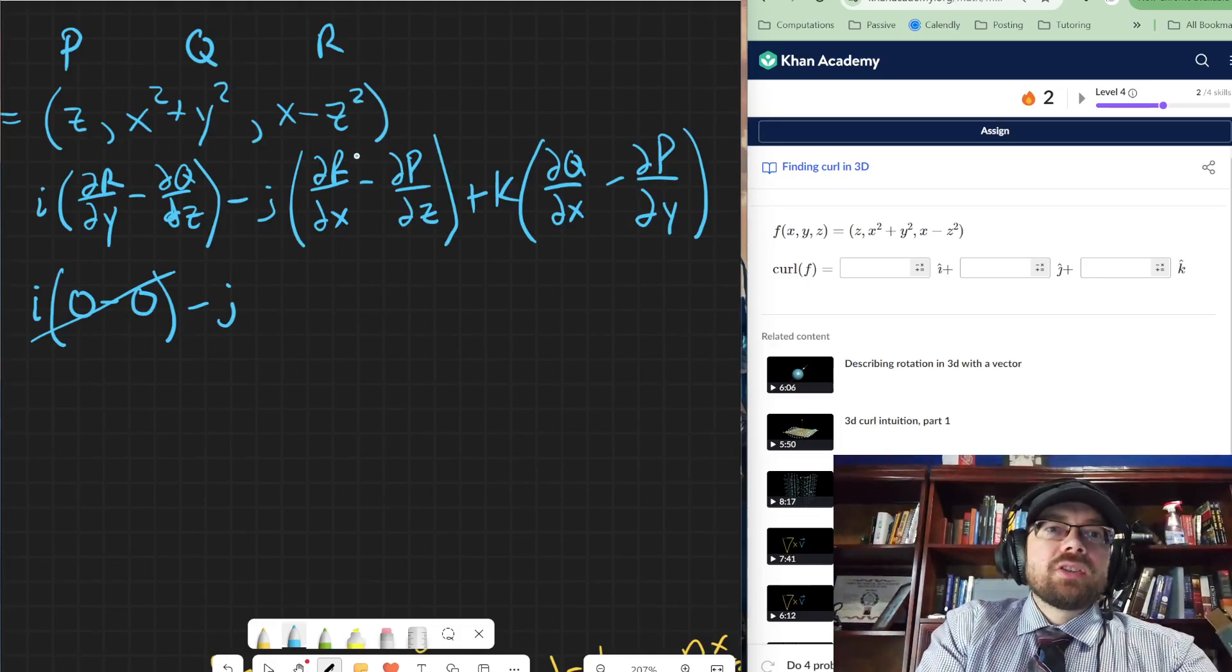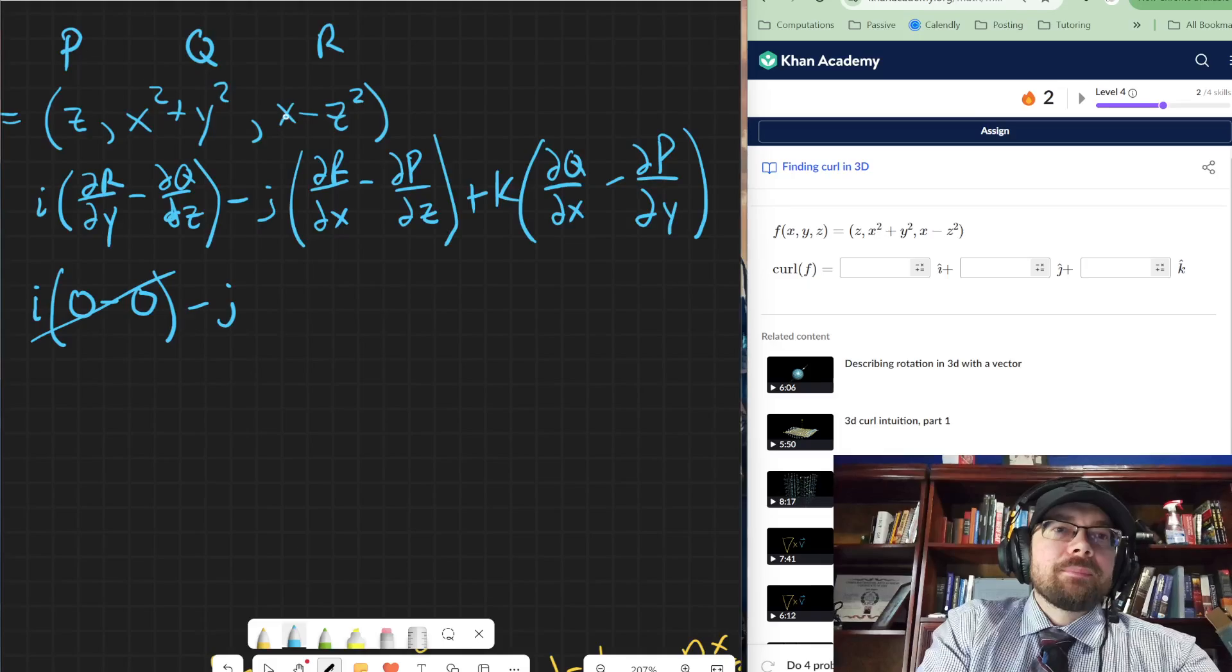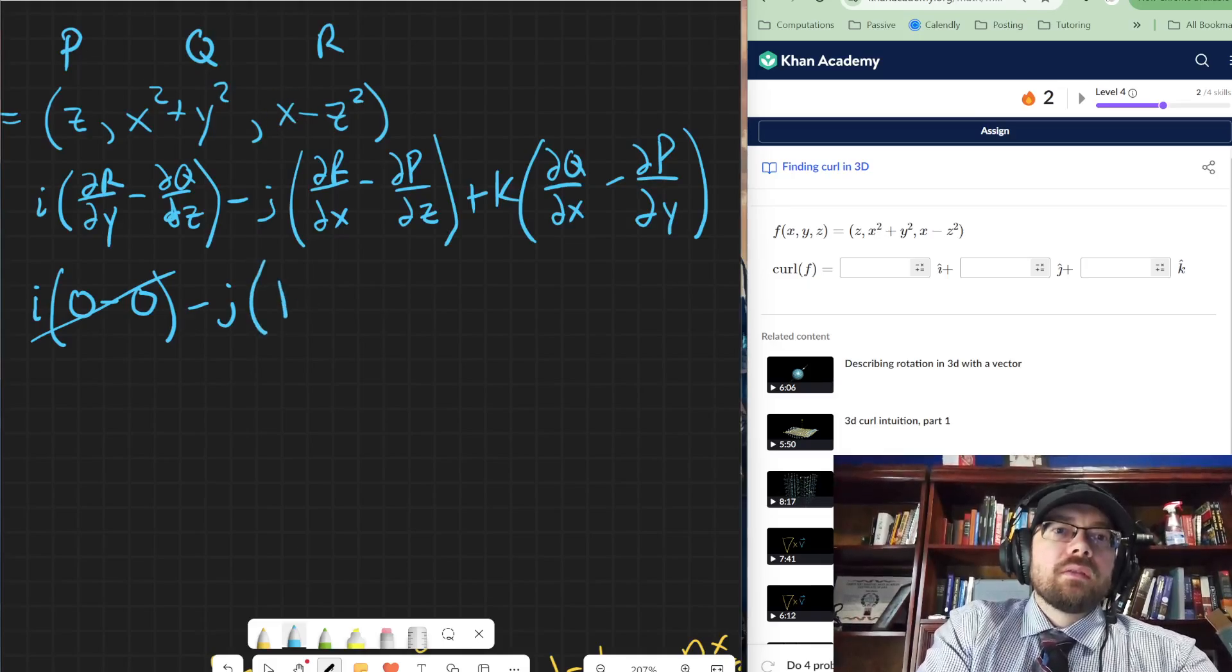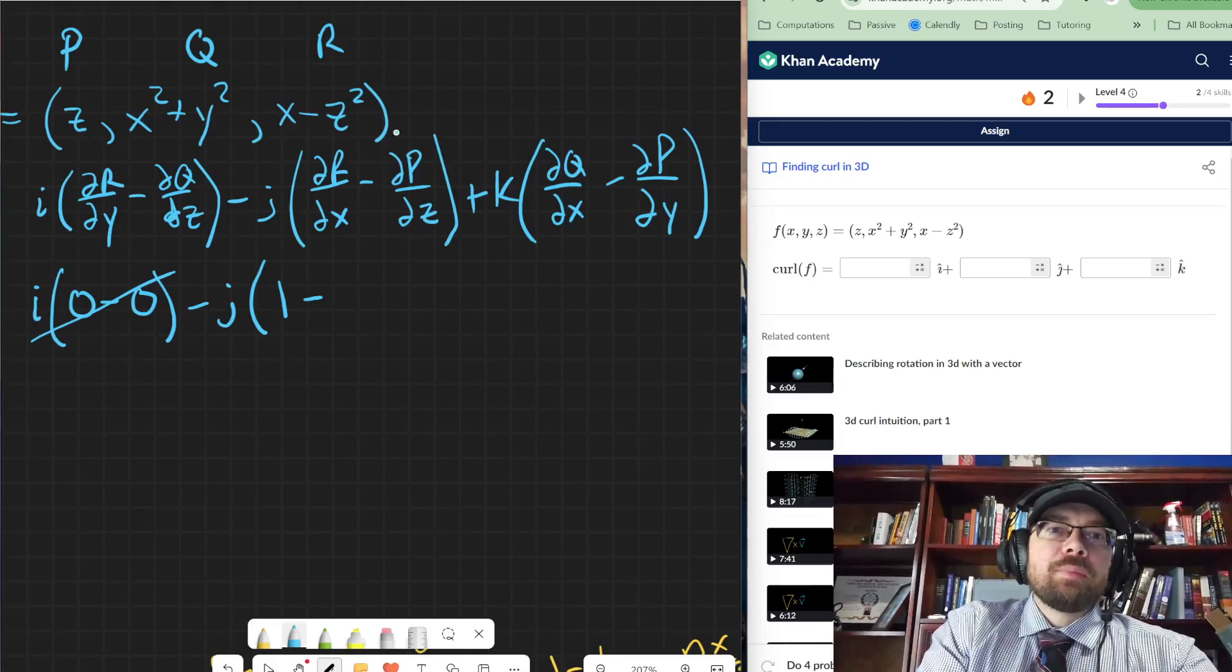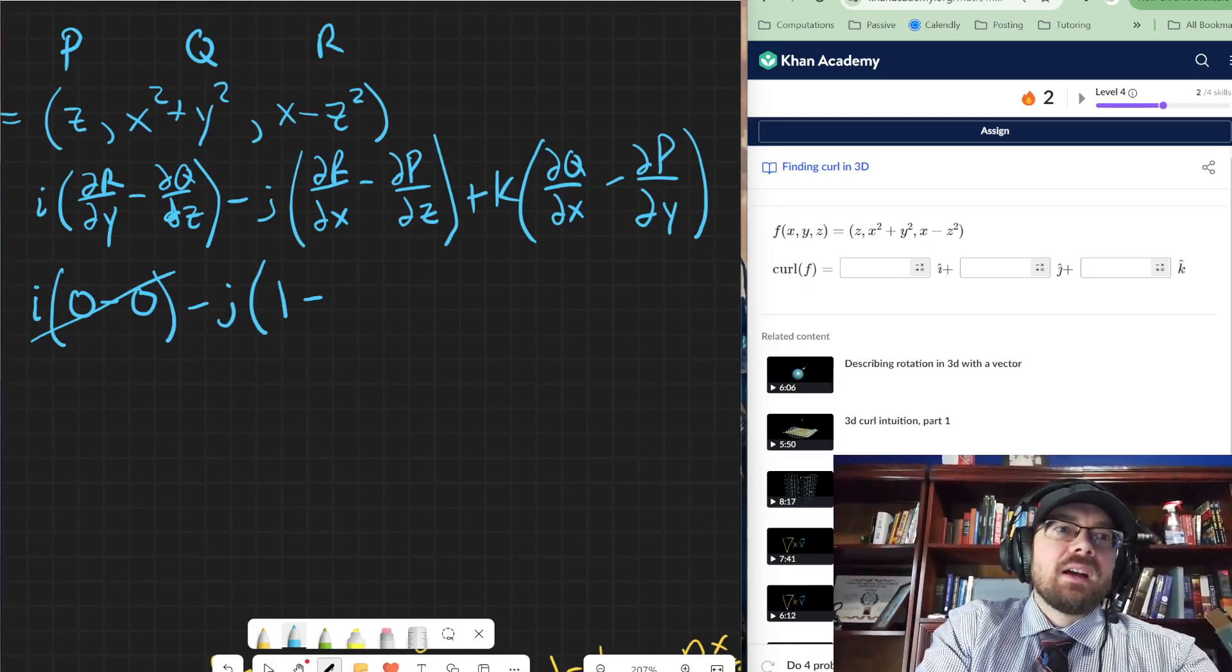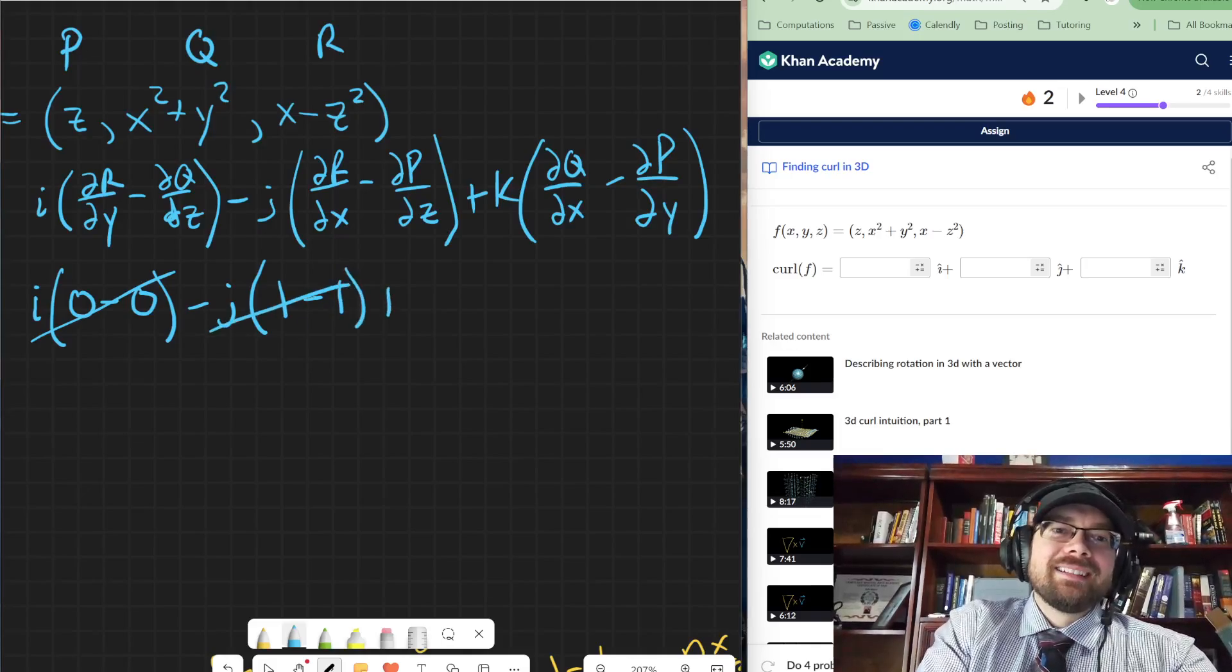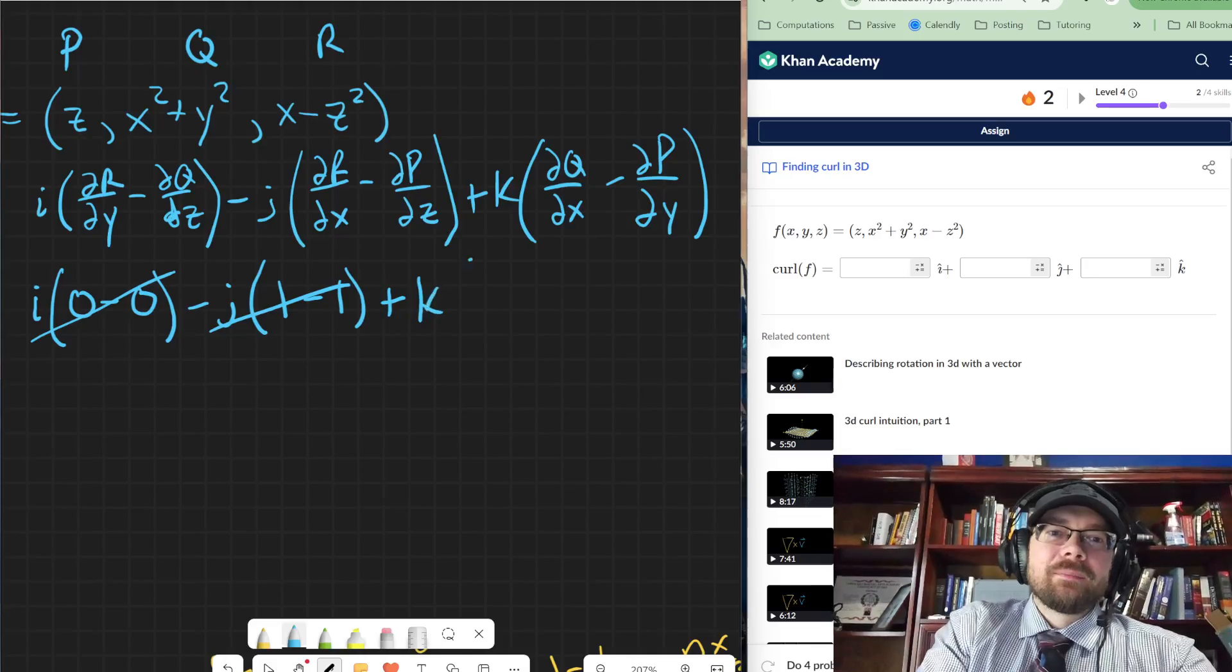Then partial of r with respect to x. So that's just going to be one. Minus partial of p with respect to z. Ah, one again. So that's zero also. I wonder if the other one's going to be zero.